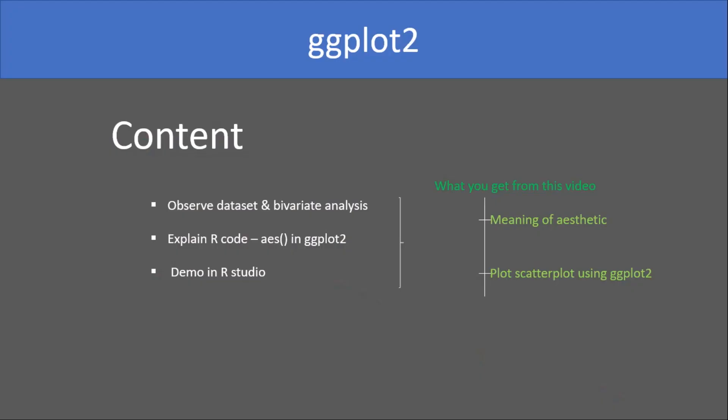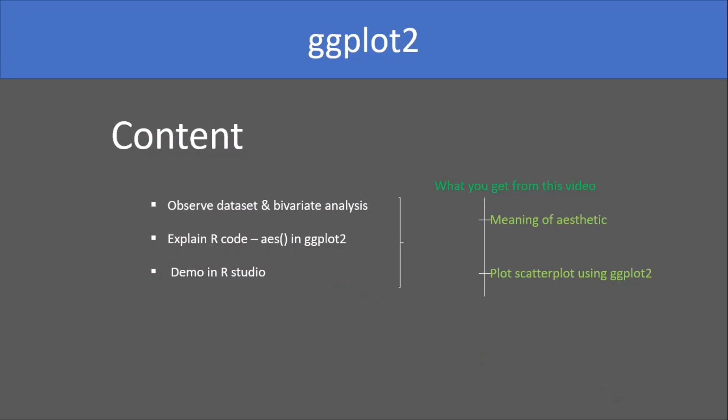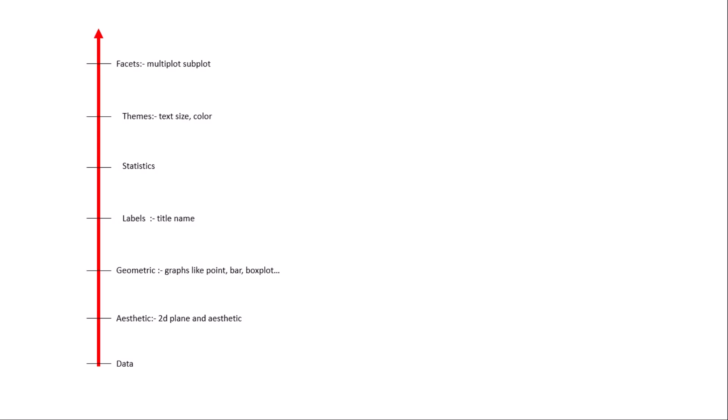So let's get started. This is the content we will cover: first we observe the data set and do bivariate analysis, then I will explain the R code. From this video you will understand what is the meaning of aesthetic and you will also be able to plot the scatter plot using ggplot2.